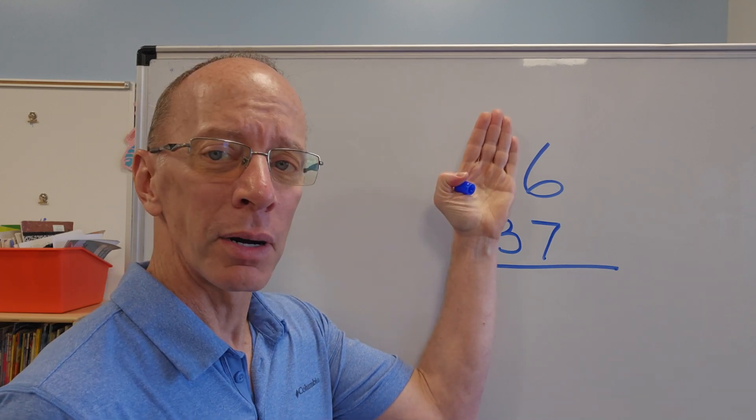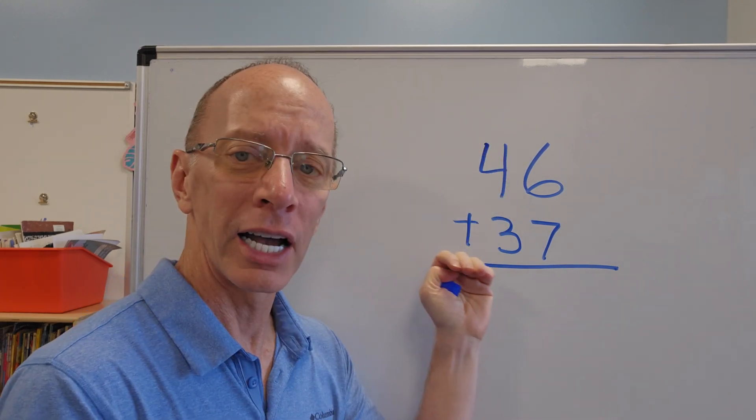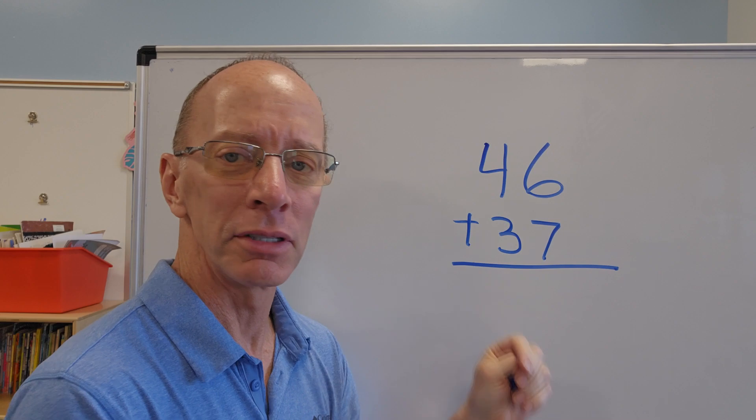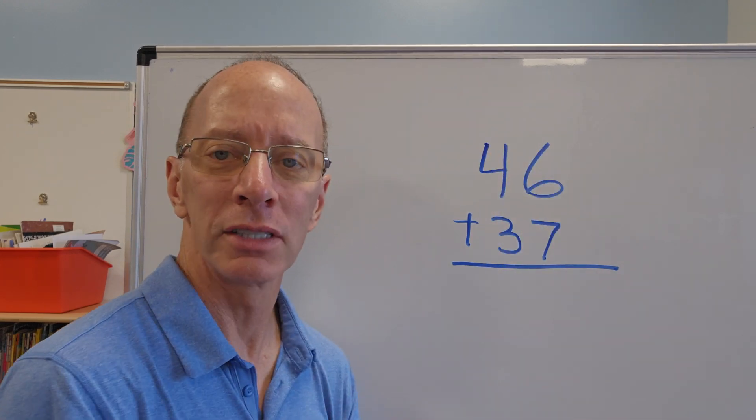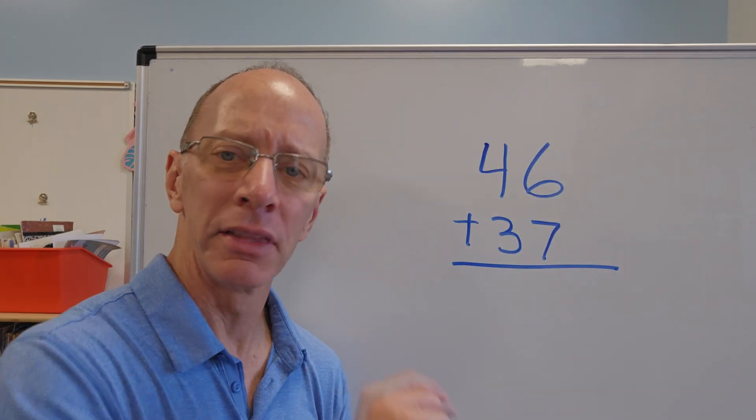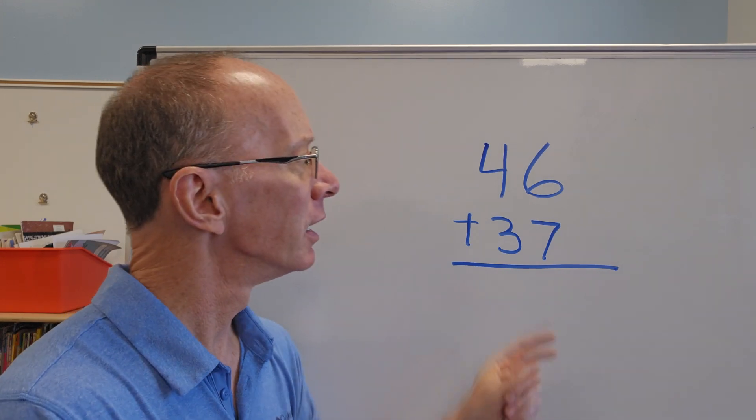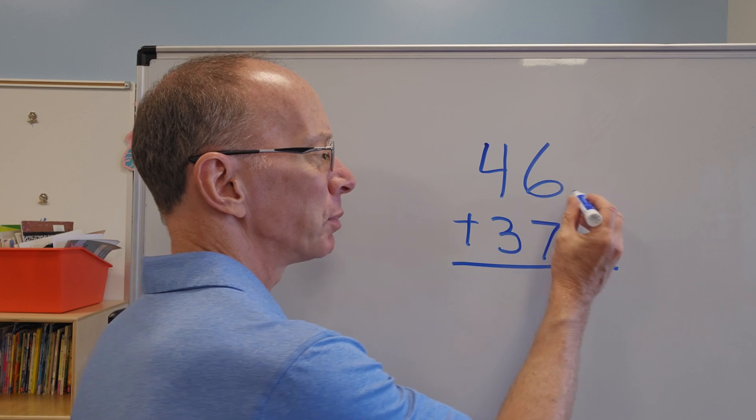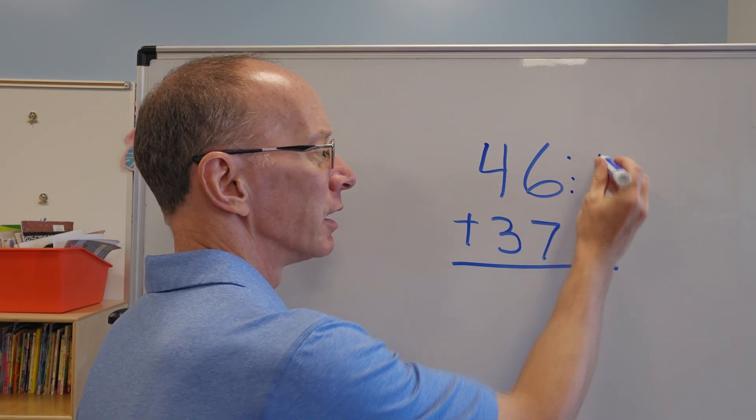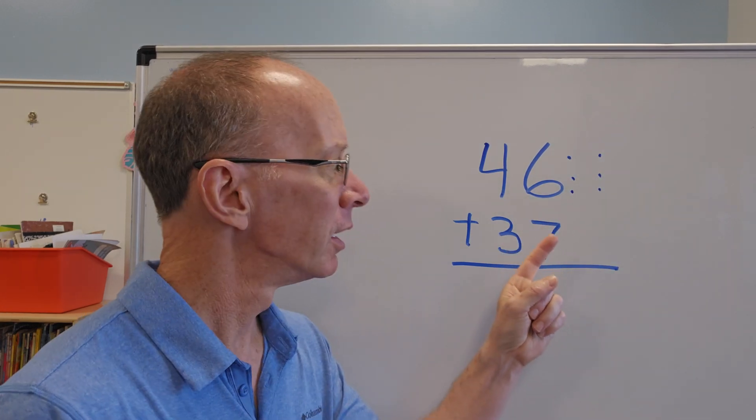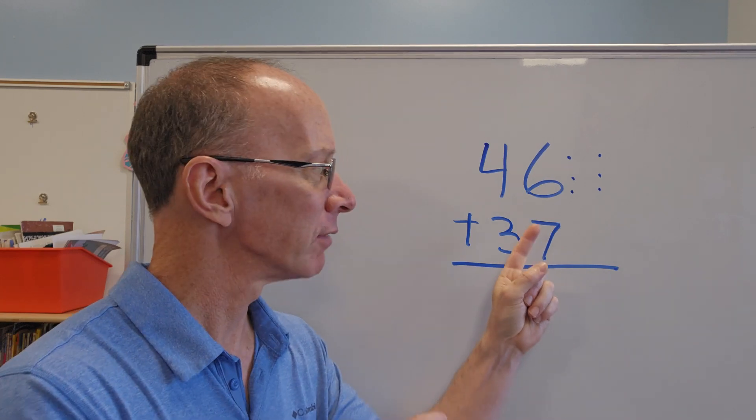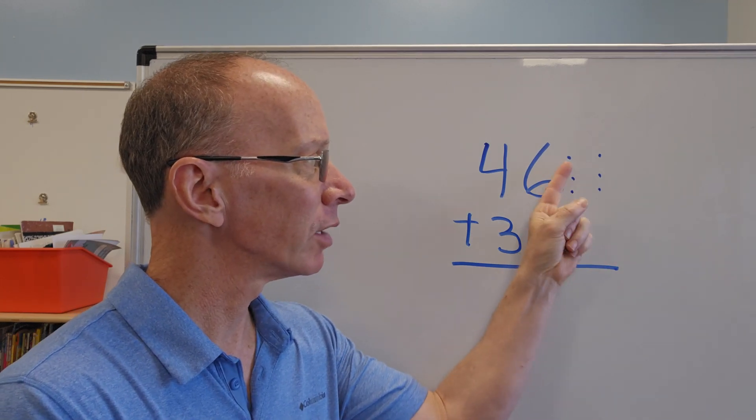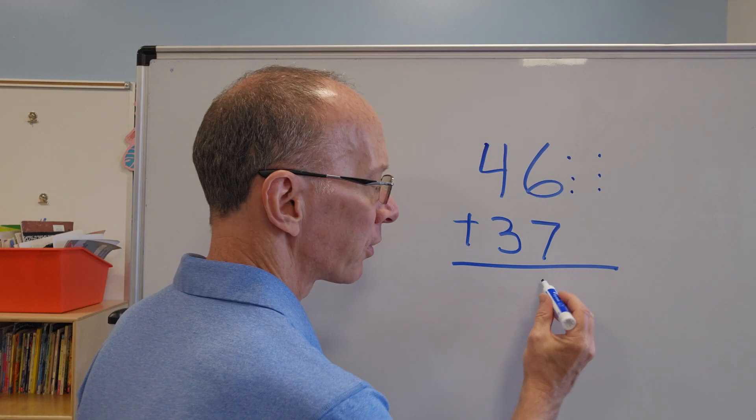So remember, you need to cover this part up. Don't even look at it. With time, when you get better, you won't have to cover it up. And there's some math ninjas out there that can do that right away. What is 6 plus 7? If you're not sure, you can always put little dots by the numbers like this, like your smaller number, and add the biggest number first. So I have 7, 8, 9, 10, 11, 12, 13. So I put the 3 right here.